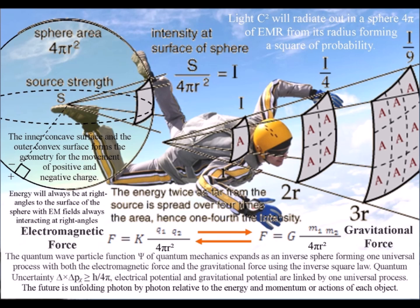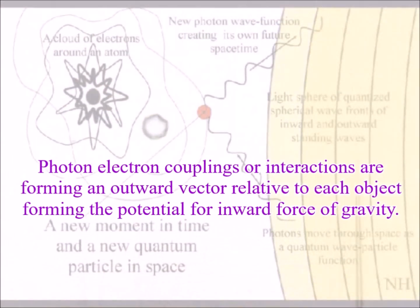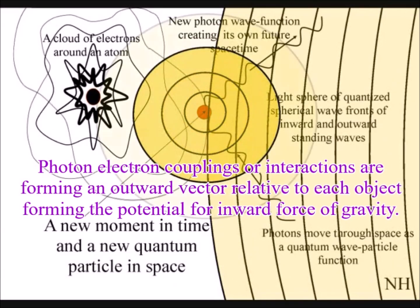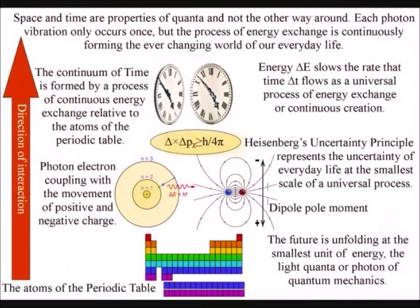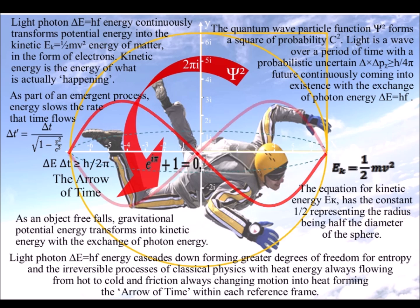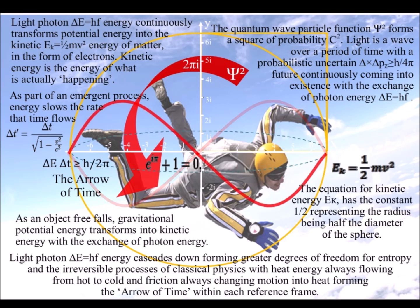Therefore, if we have a group of mass in the universe, the gravitational potential energy just goes down and down. But energy cannot be created or destroyed, so there must be a process that is changing gravitational potential energy into another form of energy. This can be explained by light photon energy continuously transforming potential energy into the kinetic energy of matter in the form of electrons. As objects freefall towards the ground, gravitational potential energy is transformed into kinetic energy through the spontaneous absorption and emission of photon energy, continuously forming a probabilistic uncertain future.